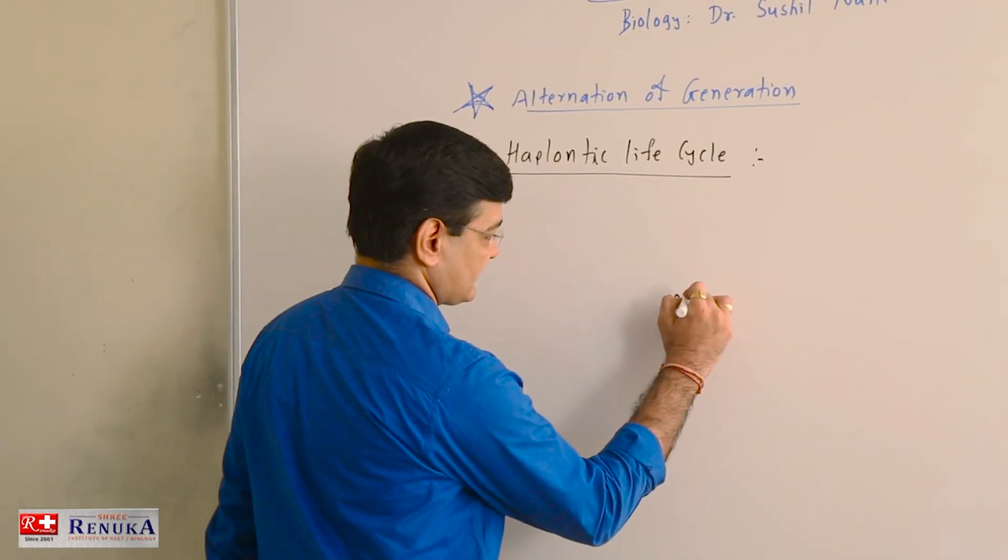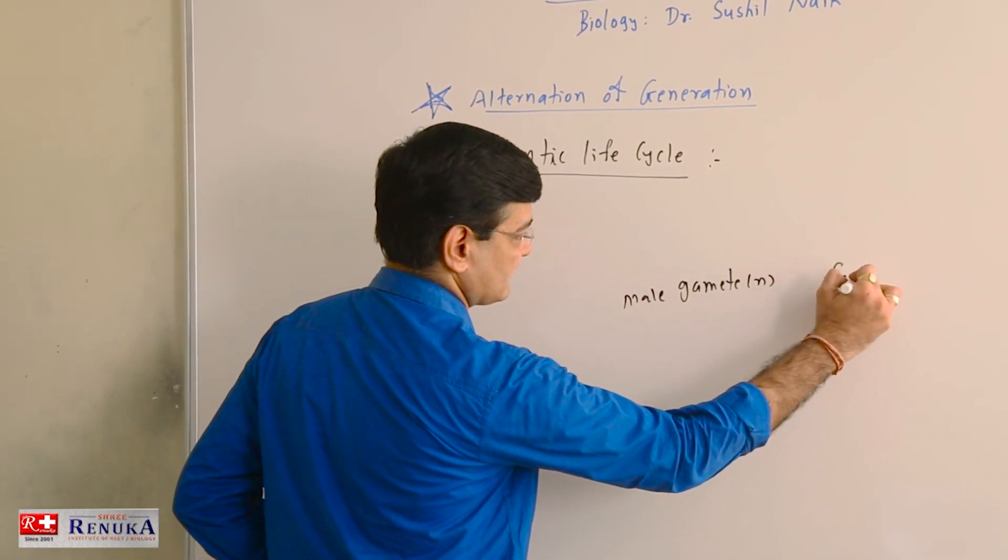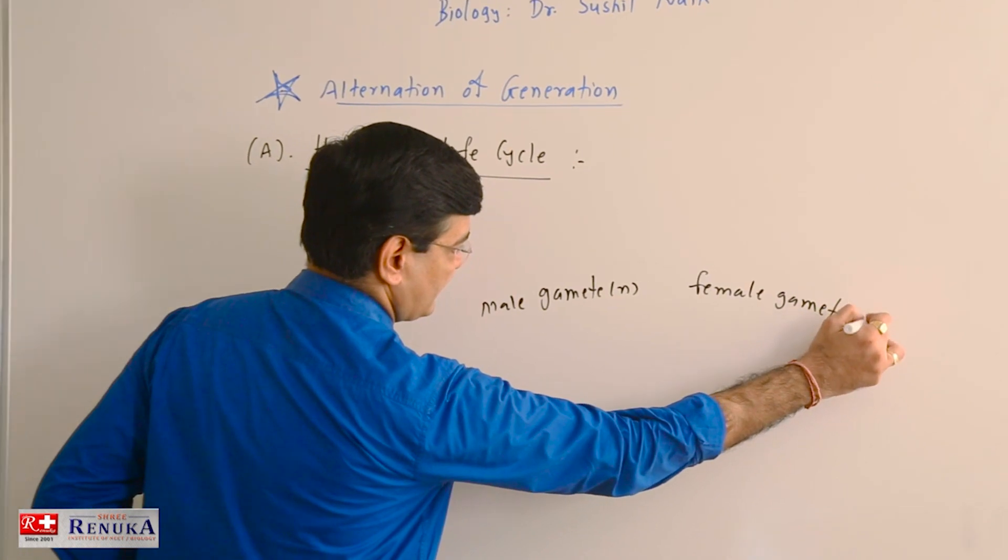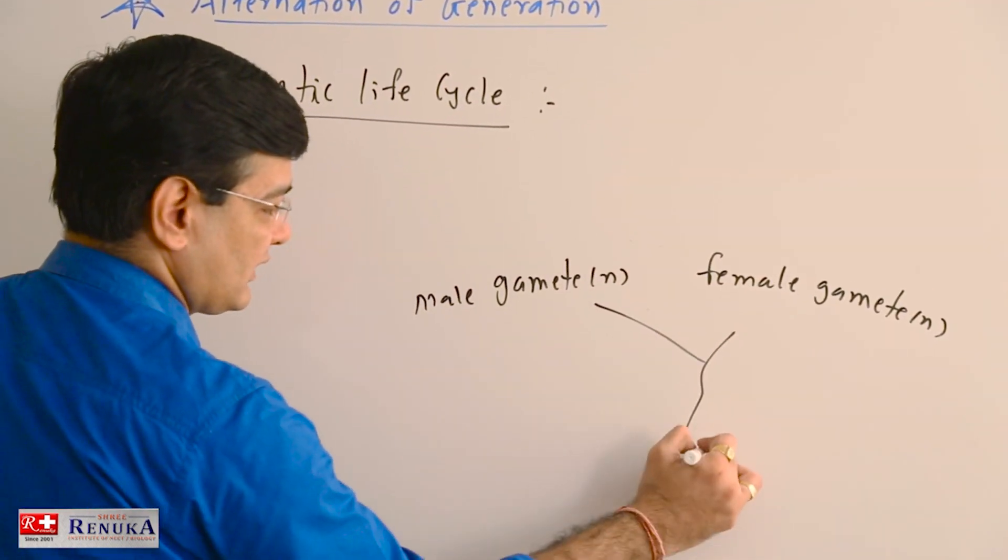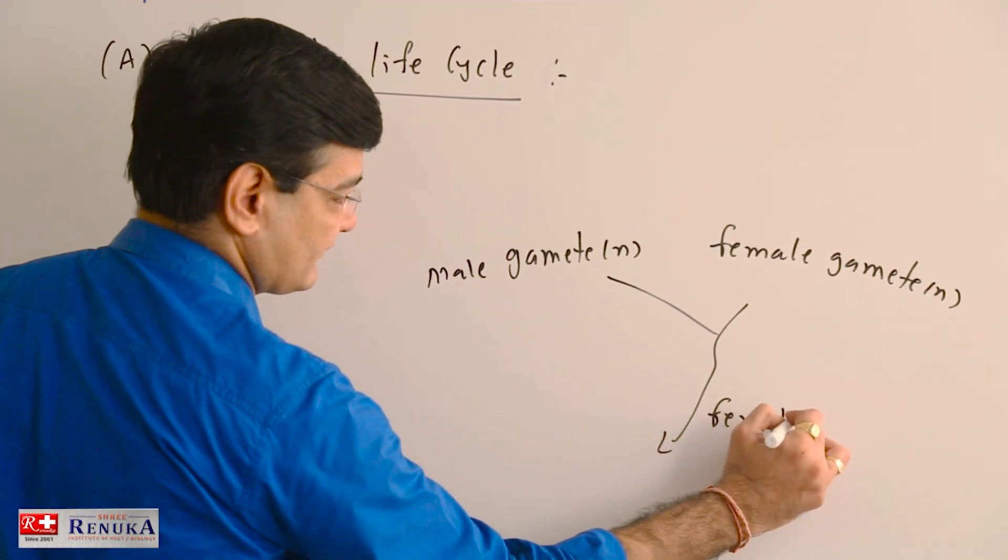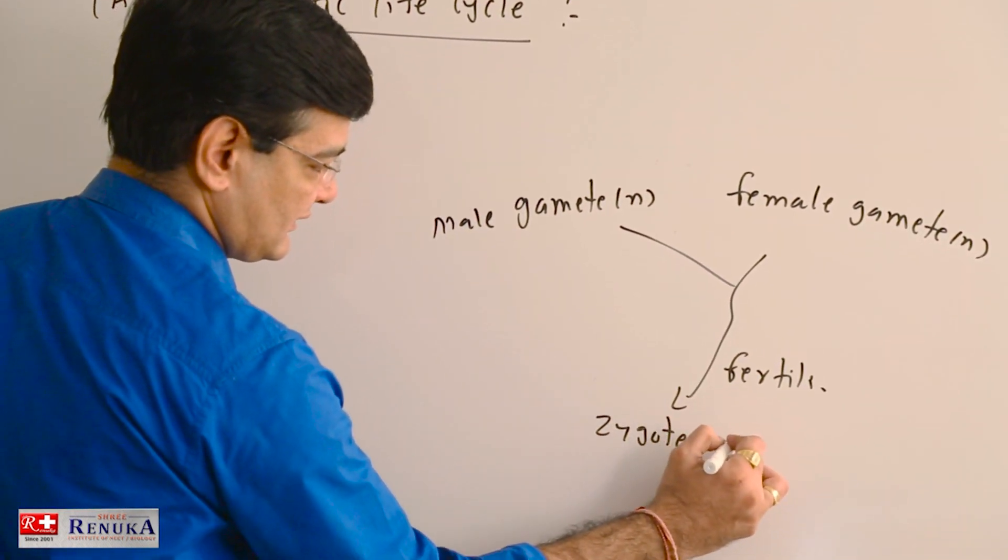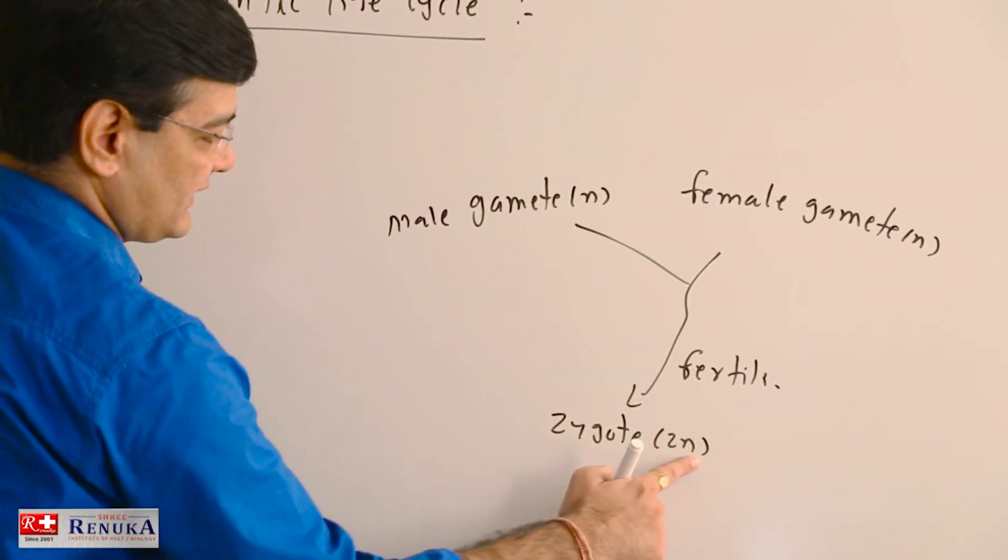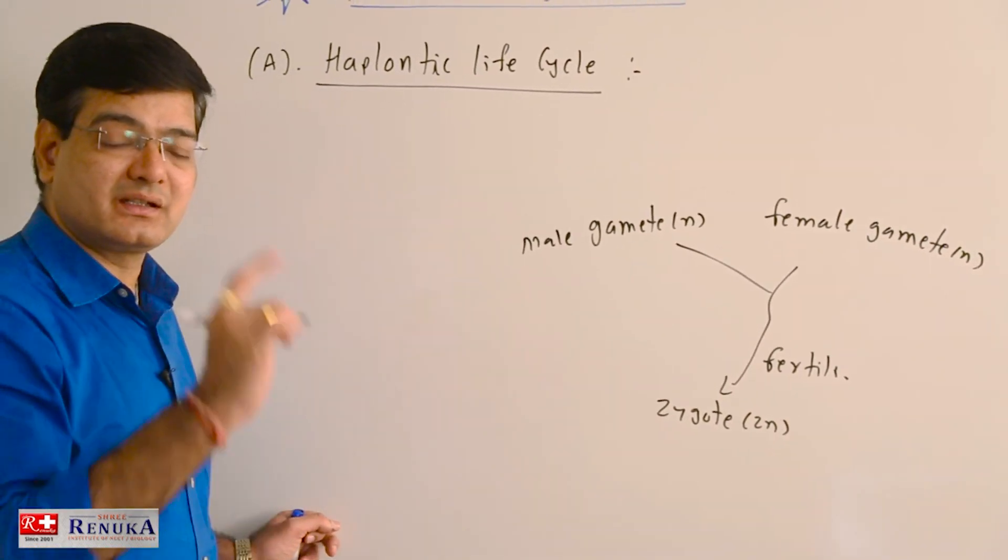Male gamete, which is haploid, and female gamete—obviously gametes are always haploid—undergo syngamy or fertilization to form zygotes. As male and female gametes are haploid, the zygote is diploid, and it is always so. Zygote is always diploid.